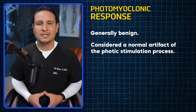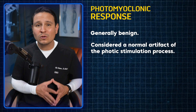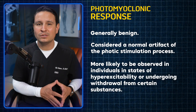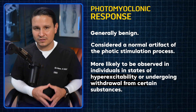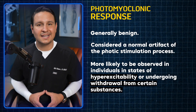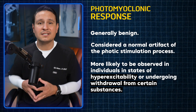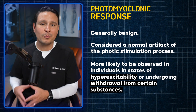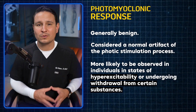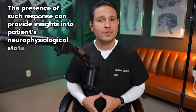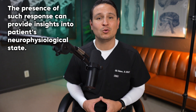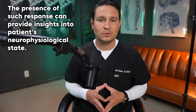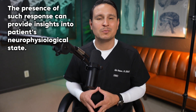According to a study published in Epilepsy Research, the photomyoclonic response is more likely to be observed in individuals who are in a state of hyperexcitability or undergoing withdrawal from certain substances. These conditions can increase the sensitivity of the frontalis muscles to stimuli, resulting in a more pronounced response. Research from the Clinical Neurophysiology Journal suggests that while this response is normal, its presence and characteristics can provide insights into a patient's neurophysiological state, especially under specific conditions.